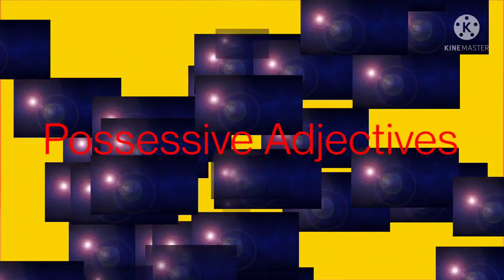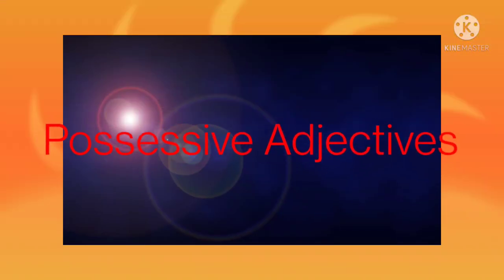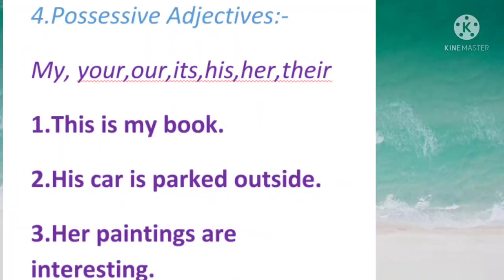The fourth one is possessive adjectives. Possessive adjectives describe about the possessiveness of the noun. For example: my, your, our, its, his, her, their, etc. This is my book — whose book is this? My. His car is parked outside — whose car is parked outside? His. Her paintings are interesting — whose paintings are interesting? Her paintings.